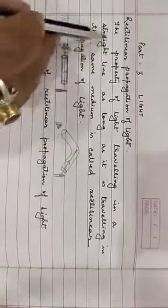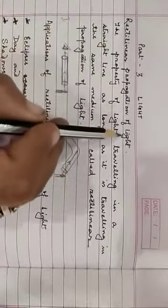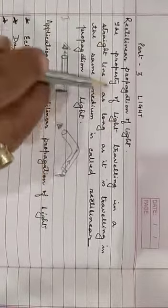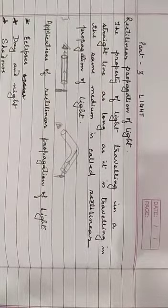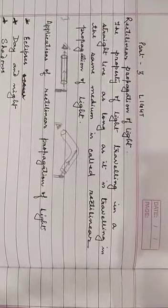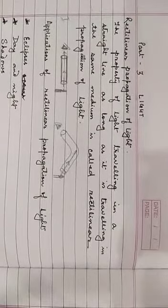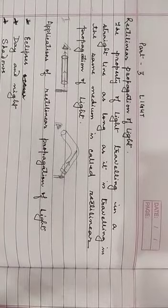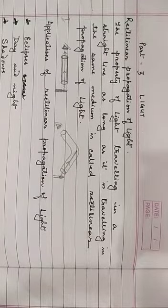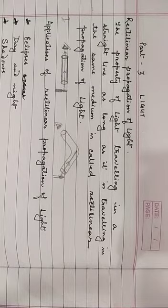So what is rectilinear propagation of light? It is the property of light travelling in straight lines. The property of light travelling in a straight line as long as it is travelling in the same medium is called the rectilinear propagation of light.